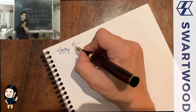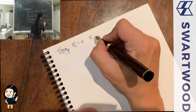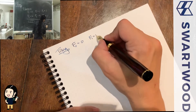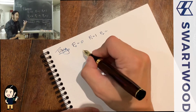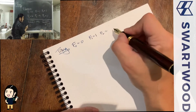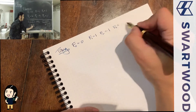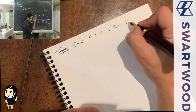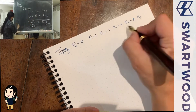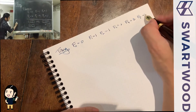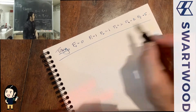Fibonacci numbers: F(0) is by definition zero, F(1) is one, and the neat part is to get everything else you just add the previous two. So F(2) is zero plus one which is one, F(3) is one plus one which is two, F(4) is two plus one which is three, and F(5) is three plus two which is five.